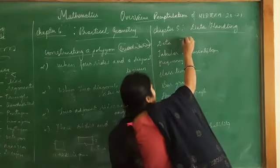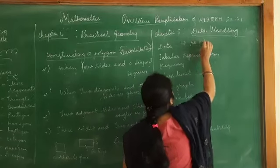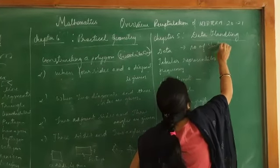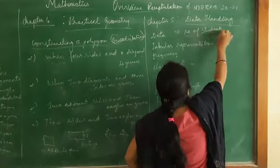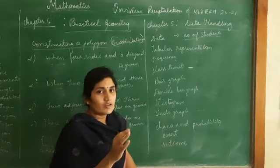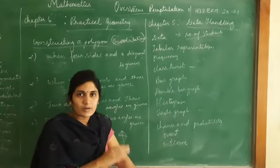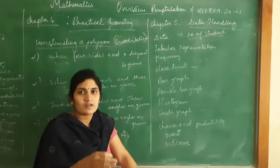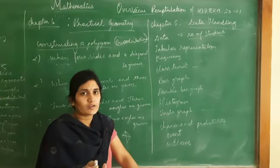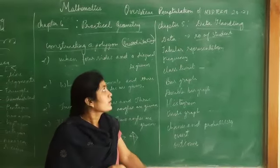For example, data could be the number of students in a school. From that data we make columns to write presentees, absentees, total, number of boys, number of girls - these are all called data.